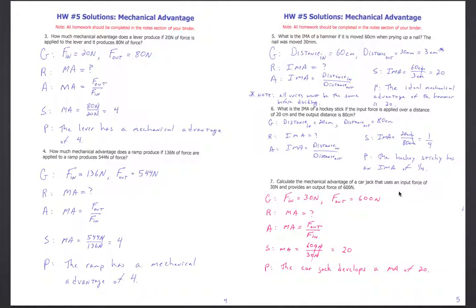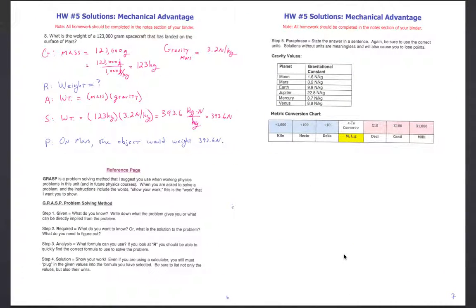Calculate the mechanical advantage of a car jack that uses an input force of 30 Newtons and provides an output force of 600 Newtons. Force in = 30 Newtons, force out = 600 Newtons. MA = force out ÷ force in = 600 ÷ 30. Newtons cancel out — the car jack multiplies your force by 20. You are 20 times stronger.